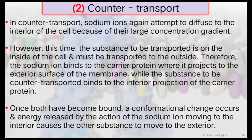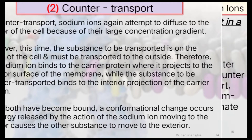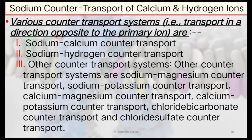In counter-transport, sodium ions again attempt to diffuse to the interior of the cell because of their large concentration gradient. However, the substance to be transported is on the inside of the cell and must be transported to the outside. The sodium ion binds to the carrier protein where it projects to the exterior surface of the membrane, while the substance to be counter-transported binds to the interior projection. Once both are bound, a conformational change occurs and energy liberated by sodium moving inward causes the other substance to move to the exterior.